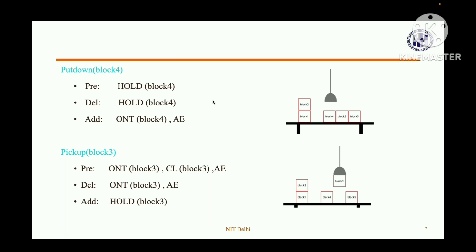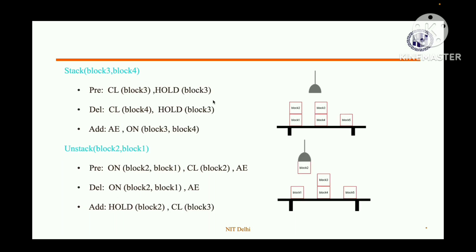Next, pick up block three from the table. Precondition: block three is on the table and block three is clear. Delete condition: block three is on the table. Add list: robotic arm holds block three. Then, stack block three on block four. Precondition: block four is clear and arm holds block three. Delete condition: block four is clear and arm holds block three. Add list: block three is on block four.